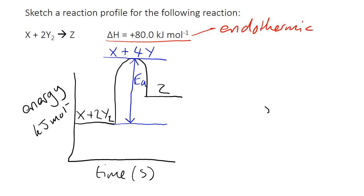And as we can see in the equation there, that we have Z and that's our product. Because the reaction is endothermic, plus 80 kilojoules per mole, Z needs to have more energy than X and Y.